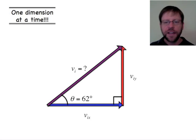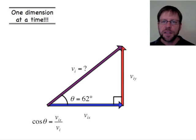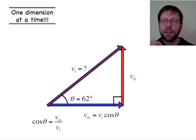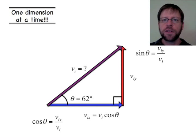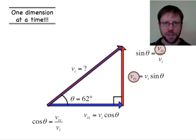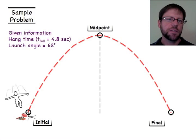The initial velocity vector at the launch angle makes a triangle with its components: vix (horizontal) and viy (vertical). Using simple trigonometry with the common variable vi, we get vix = vi·cos(θ) and viy = vi·sin(θ). I'll keep these expressions off to the side to come back to later.